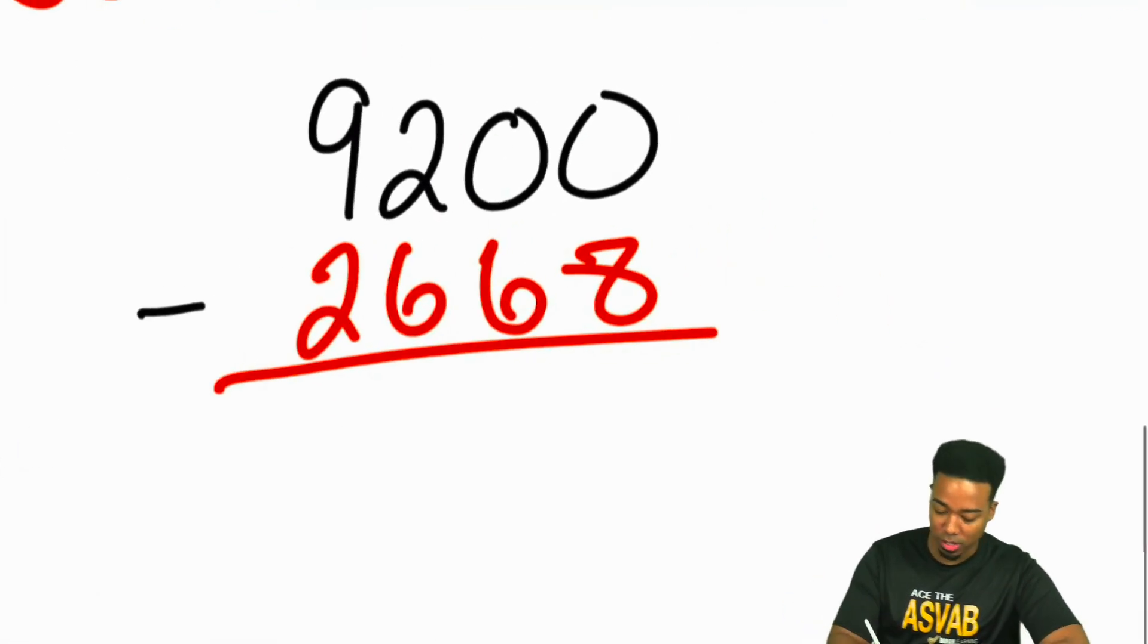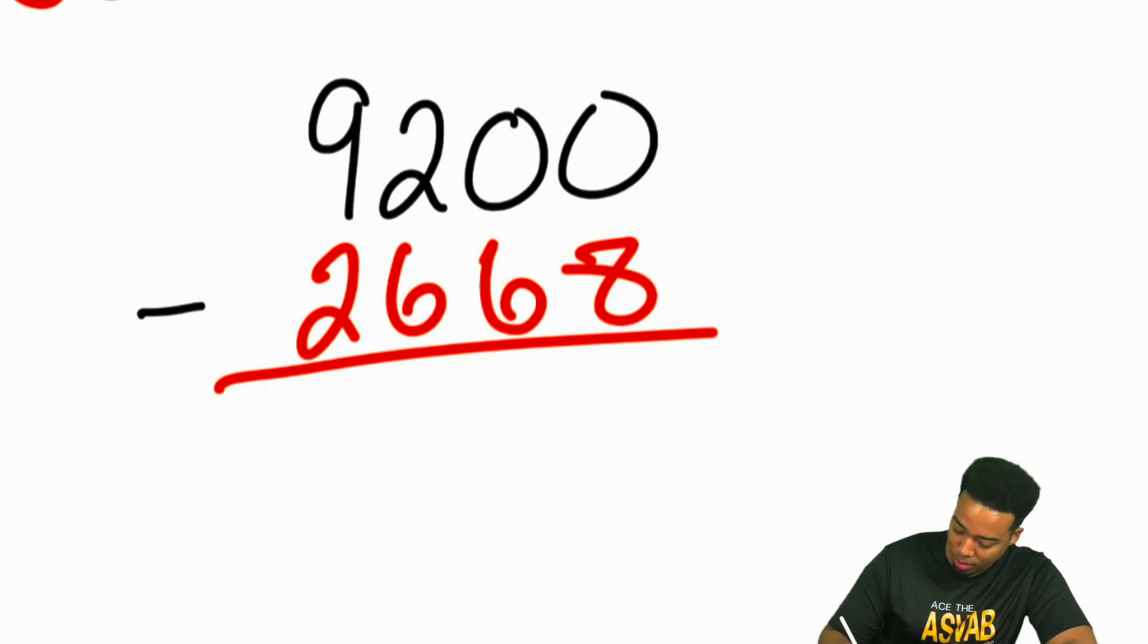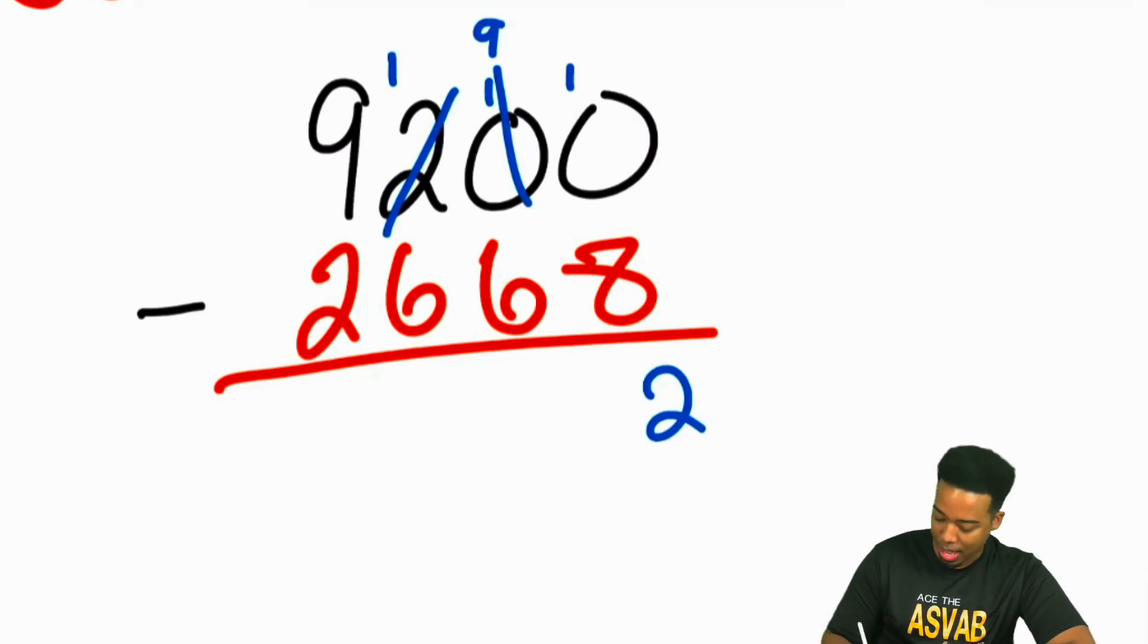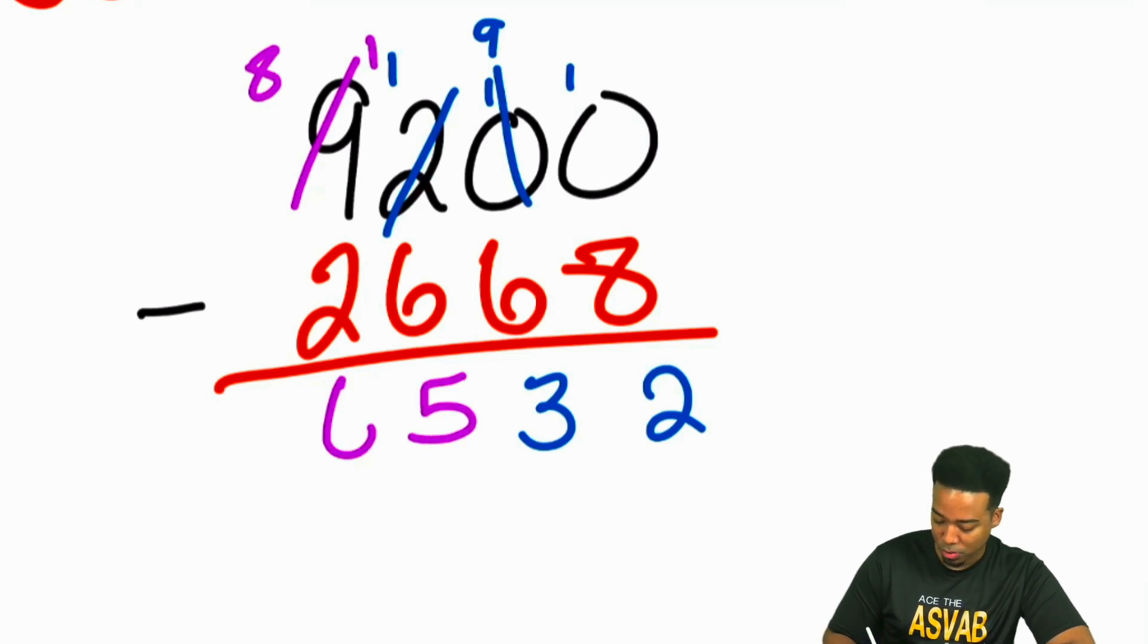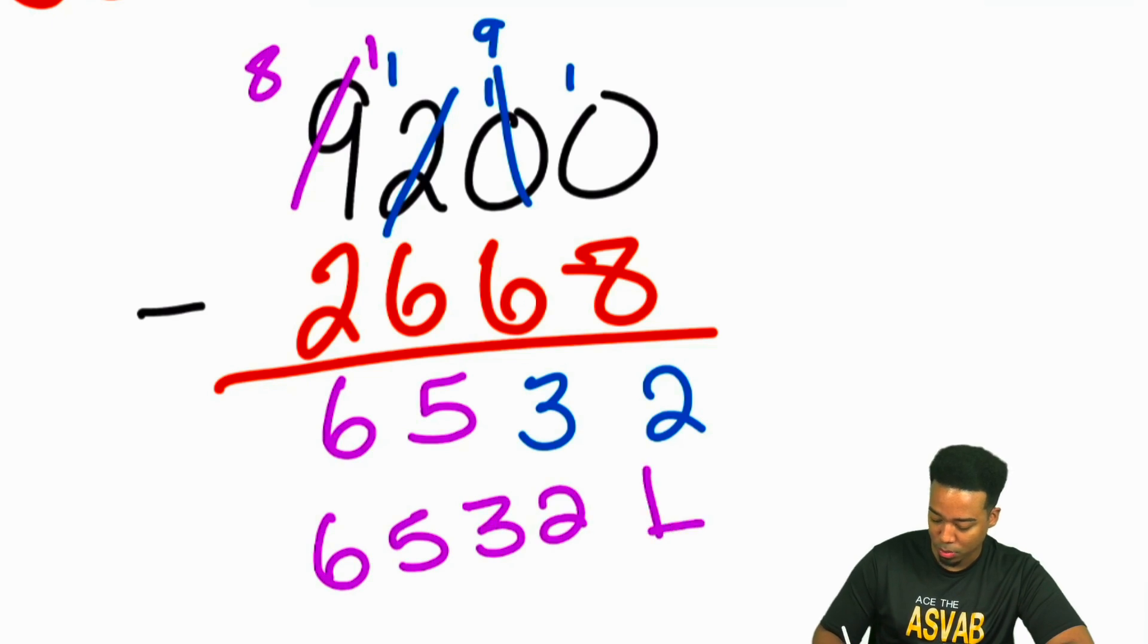So I can borrow. That's 1, that's 10. Borrow again, that's 9, that's 10. 10 minus 8 is 2. 9 minus 6 is 3. We can't do this next one, so we have to borrow from here. So then 11 minus 6 is 5. 8 minus 2 is 6. 6,532 left.